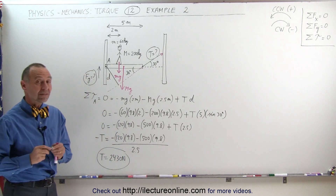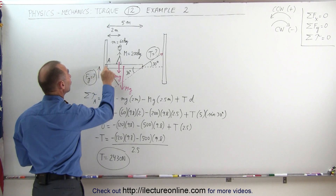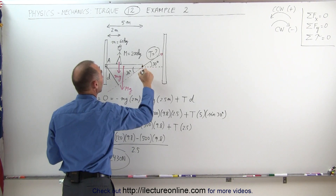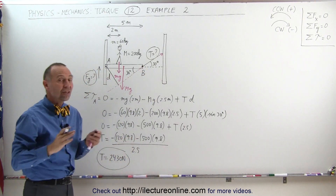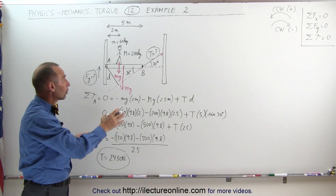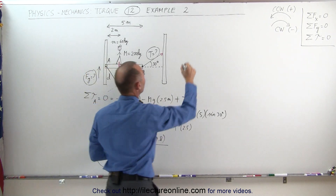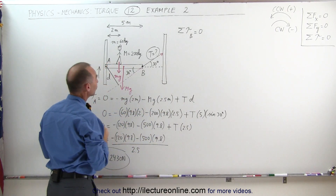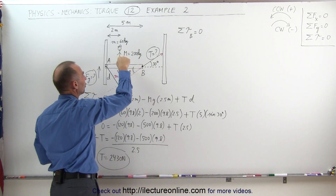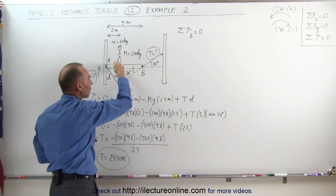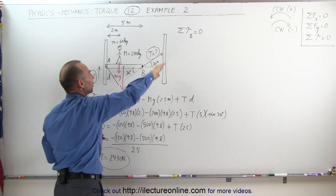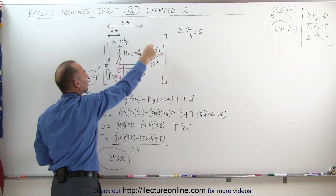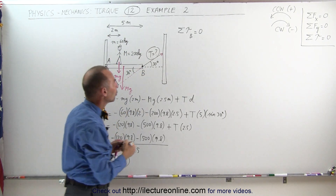Now we need to find the supporting force by the hinge in the vertical direction. To do that, we shift our pivot point to the right end of the beam and call it point B. Since things are in equilibrium, all the torques acting about point B must add up to zero. There are three torques: the two weights cause counterclockwise (positive) torques, and the hinge force pushing up on the beam causes a clockwise (negative) torque.